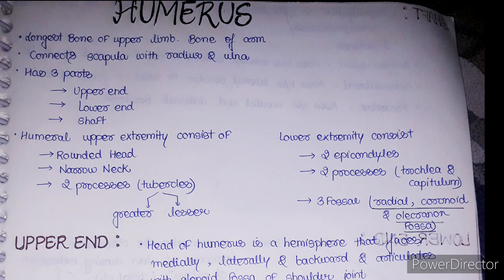The upper end of the humerus consists of a rounded head, a narrow neck, and two processes also known as tubercles — the greater tubercle and the lesser tubercle. The lower end consists of two epicondyles, two supracondyles, two processes (trochlea and capitulum), and three fossae: the radial fossa, coronoid fossa, and olecranon fossa.